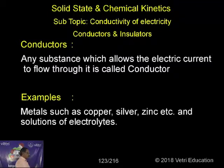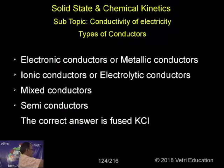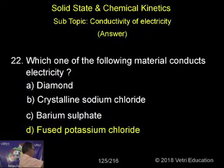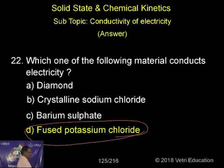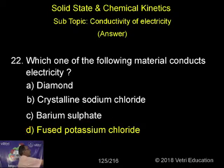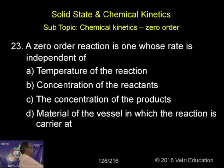Any substance that allows electric current to pass through it is called a conductor — for example, metals such as copper and silver. The correct answer here is fused potassium chloride.